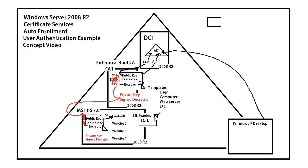We're going to take it to the next level. If a user connects to this Data folder right now, the connection is already going to be encrypted. What we want to do is add another level of security and require the user to show a certificate first for authentication before they can even get to the folder. We want to talk about the idea of user authentication, and then in other videos we'll go through the steps for auto-enrollment.